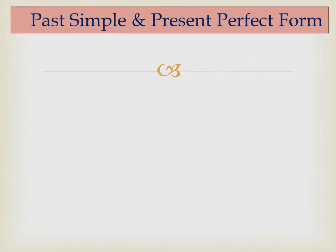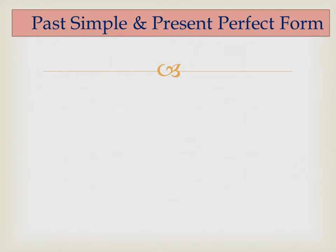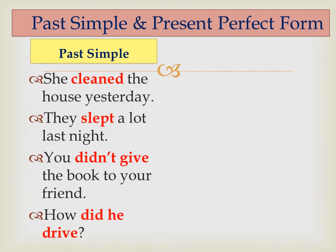Now let's go over the forms quickly. For the past simple: 'She cleaned the house yesterday,' 'They slept a lot last night.' For a positive sentence, check if the verb is regular — add -d, -ed, or -ied — or irregular, in which case you study it by heart, like 'sleep' becomes 'slept.' For the negative form, use 'didn't' plus the base form of the verb. For a question, start with the question word, then 'did,' then the subject, then the base form of the verb.